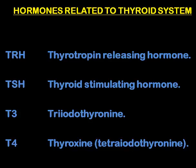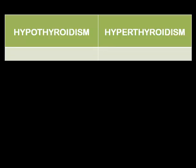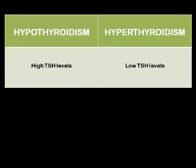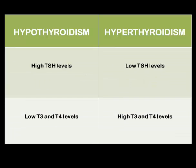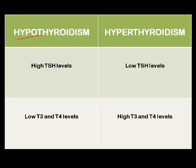Whenever a transcriptionist hears thyroidism — either hyper or hypo — the first area which he or she has to look at in a report is the lab values. As discussed, when your gland is hypo-functioning, the thyroid gland is hypo, you need more stimulation, so TSH goes high — the thyroid-stimulating hormone goes high.